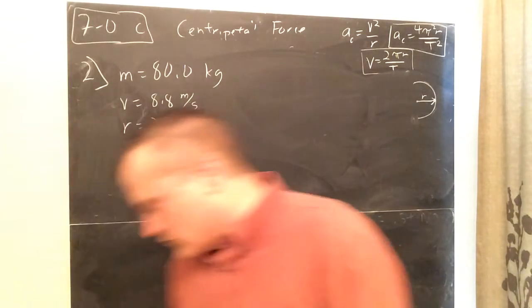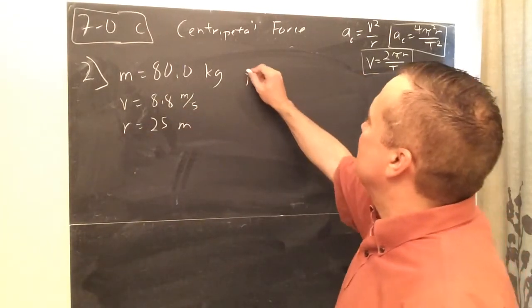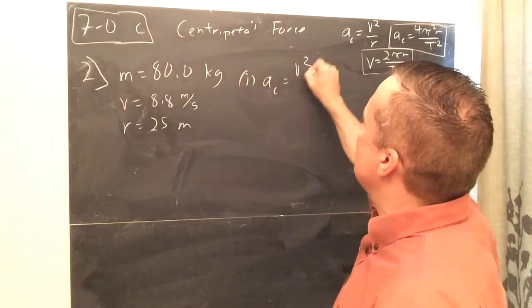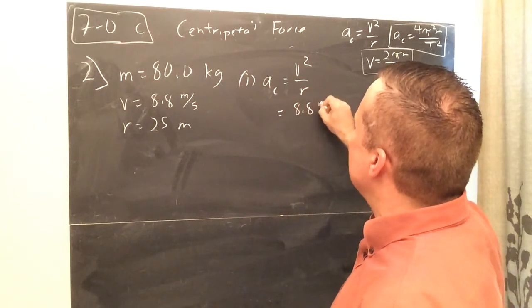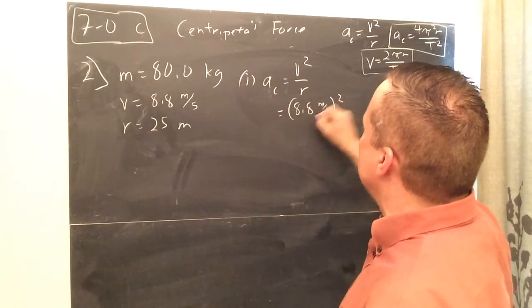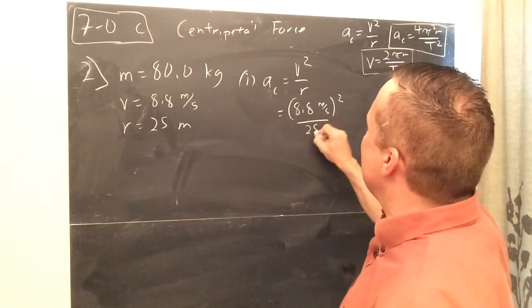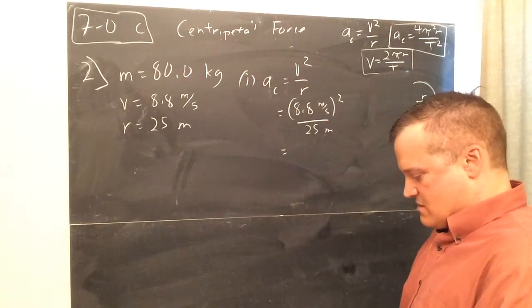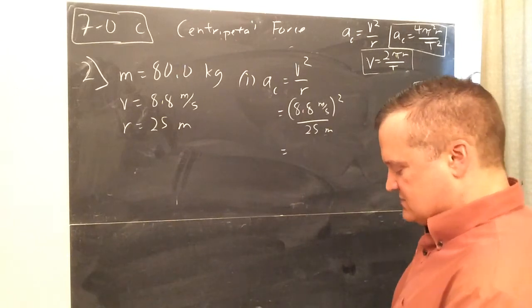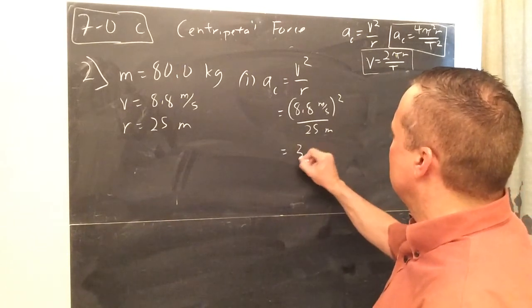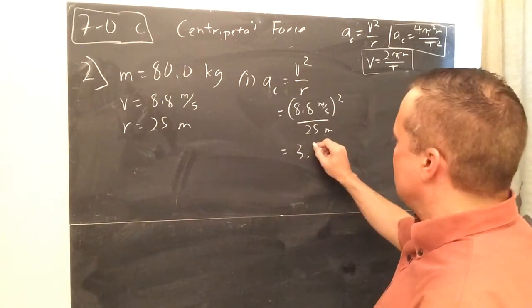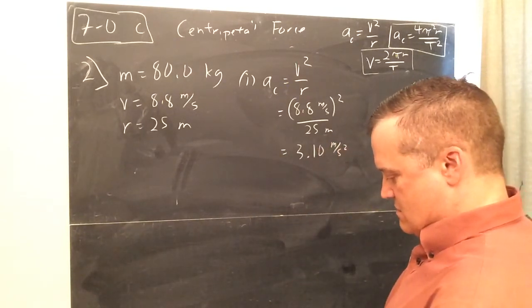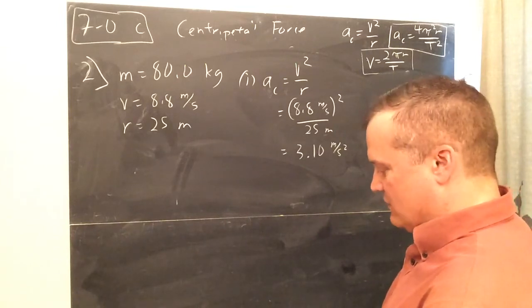Then there's one more question. An 80 kilogram runner moving at a speed of 8.8 meter per second rounds a bend with a radius of 25 meters. So on the end part of the track, you go around a circle, what's the radius of that circle right there. During that period, we can apply uniform circular motion. First of all, what is the acceleration of the runner? This is easy because they gave us the velocity. The acceleration is v squared over r, 8.8 meter per second squared divided by 25 meter. It's 3.10 meter per second squared.